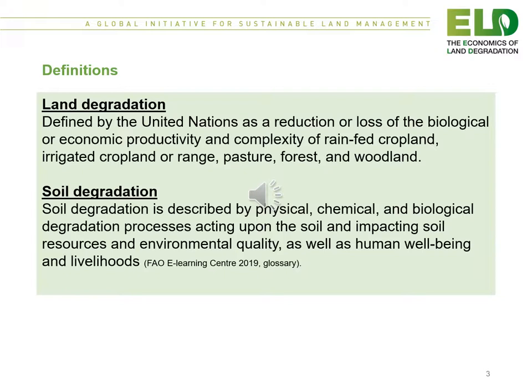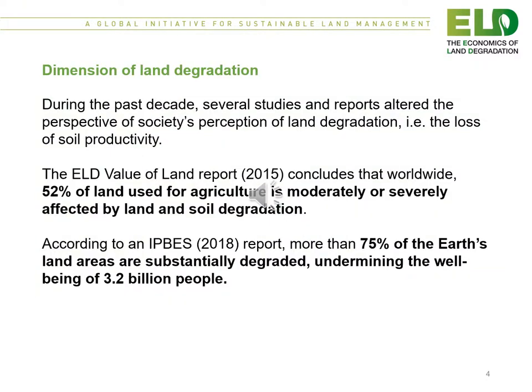Beginning with some definitions: land degradation, as defined by the United Nations, is a reduction or loss of the biological or economic productivity and complexity of rain-fed cropland, irrigated cropland, or range, pasture, forest and woodland. Soil degradation is defined by the physical, chemical and biological degradation processes acting upon the soil and impacting soil resources, environmental quality, as well as human well-being and livelihoods.